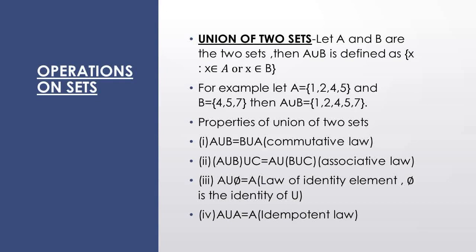Next are the properties of union of two sets. First is the commutative law. Commutative law कहता है कि चाहें आप A का union B के साथ निकालिये या आप B का union A के साथ निकालिये, दोनों का result same आएगा.